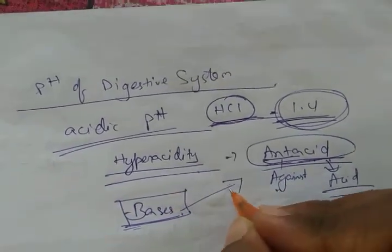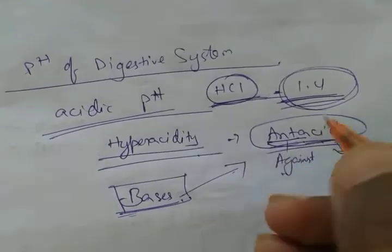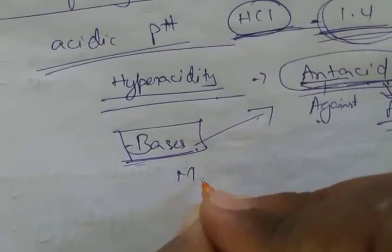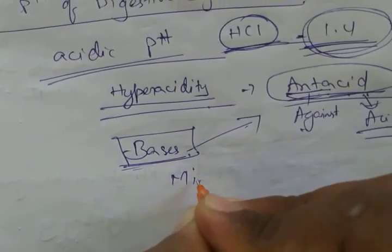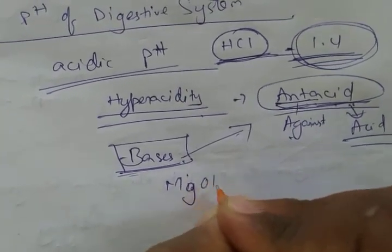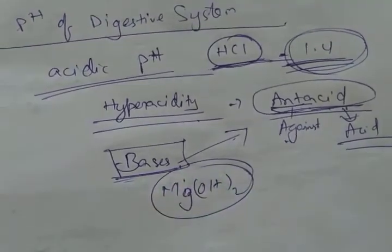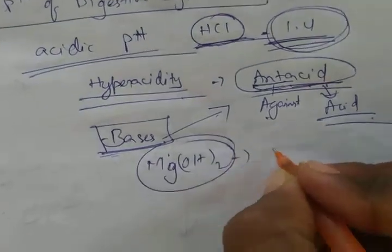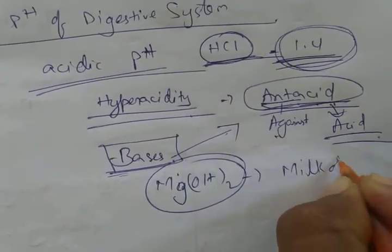Basically they are bases which neutralize acids. We can use magnesium hydroxide, which is called milk of magnesia.